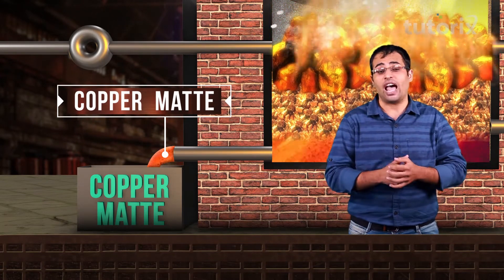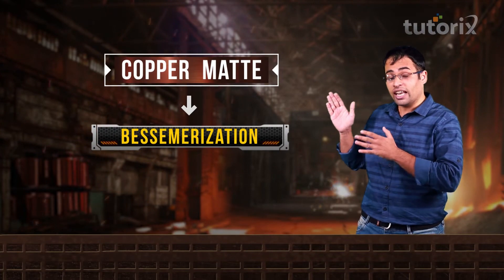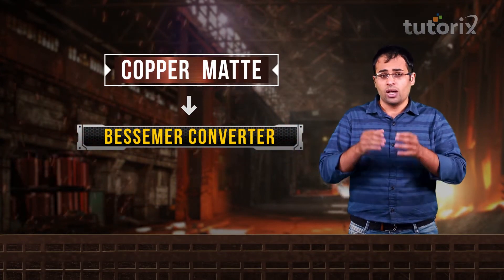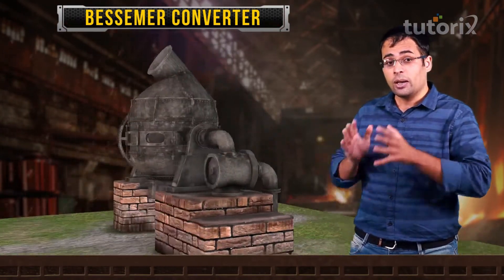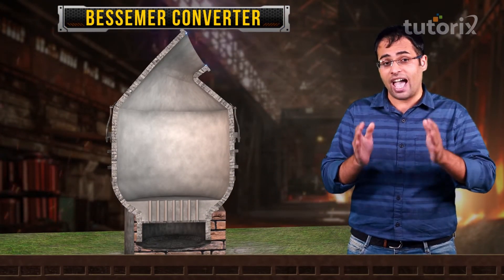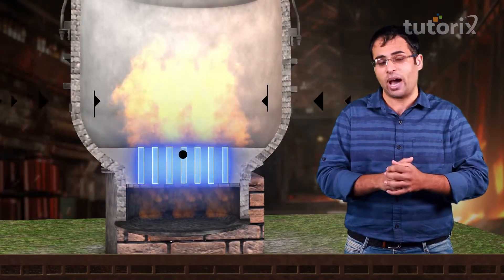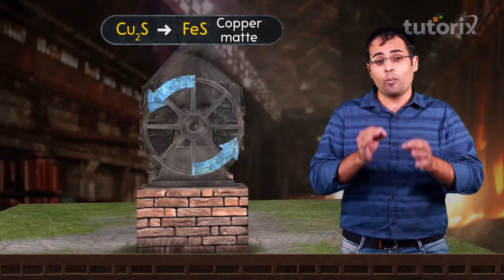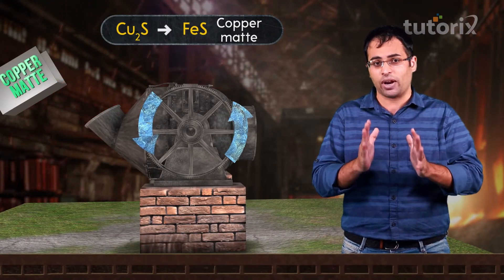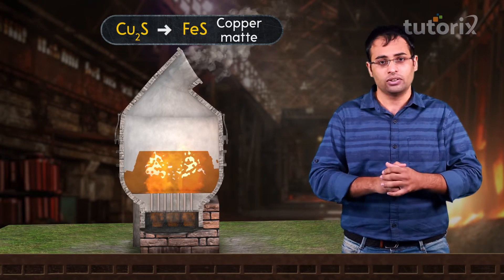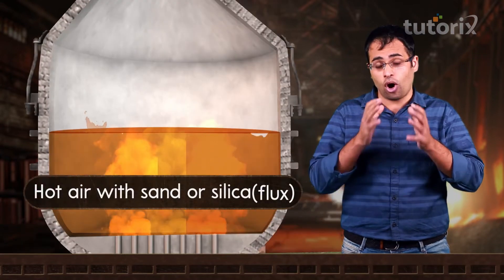The copper matte obtained from the blast furnace undergoes a process called Bessemerization in a vessel called the Bessemer converter. A Bessemer converter is a pear-shaped vessel made up of steel from outside and from inside lined with fireproof bricks. It is narrow at the top and widens out at the bottom, is fixed horizontally around its horizontal axis, and can be tilted in either direction. Hot air is blown in from the bottom with the help of pipes called tuyeres. Copper matte is introduced into this Bessemer converter and falls onto the bottom of the furnace.